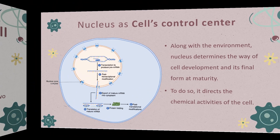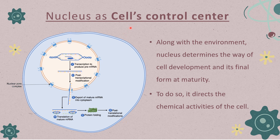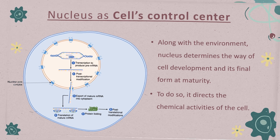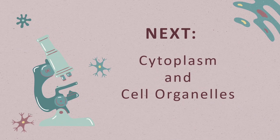Another function is that nucleus acts as the control center of the cell. The nucleus has DNA — the code of life — so it has the capability to control all activities of the cell. It has the potential to direct the chemical activities of the cell and to receive stimuli from the environment and respond accordingly. It determines all functions and activities of the cell. This is all for today. In the next video, we'll talk about cytoplasm and the cell organelles present in cytoplasm. Thank you.